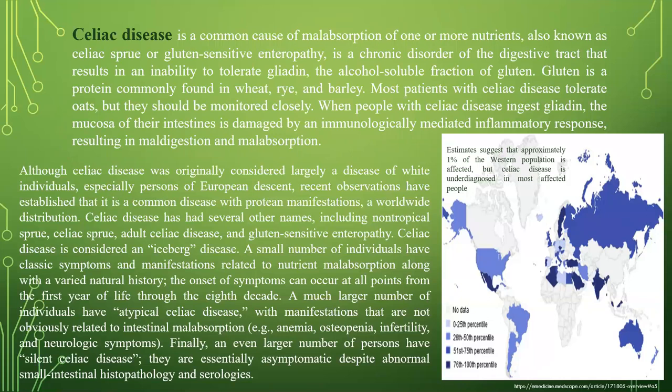Celiac disease is a common cause of malabsorption of one or more nutrients, also known as celiac sprue or gluten-sensitive enteropathy. It is a chronic disorder of the digestive tract resulting in an inability to tolerate gliadin, the alcohol-soluble fraction of gluten. Gluten is a protein commonly found in wheat, rye, and barley. Most patients with celiac disease tolerate oats, but this should be monitored closely. When people with celiac disease ingest gliadin, the mucosa of their intestine is damaged by an immunologically mediated inflammatory response, resulting in maldigestion and malabsorption.